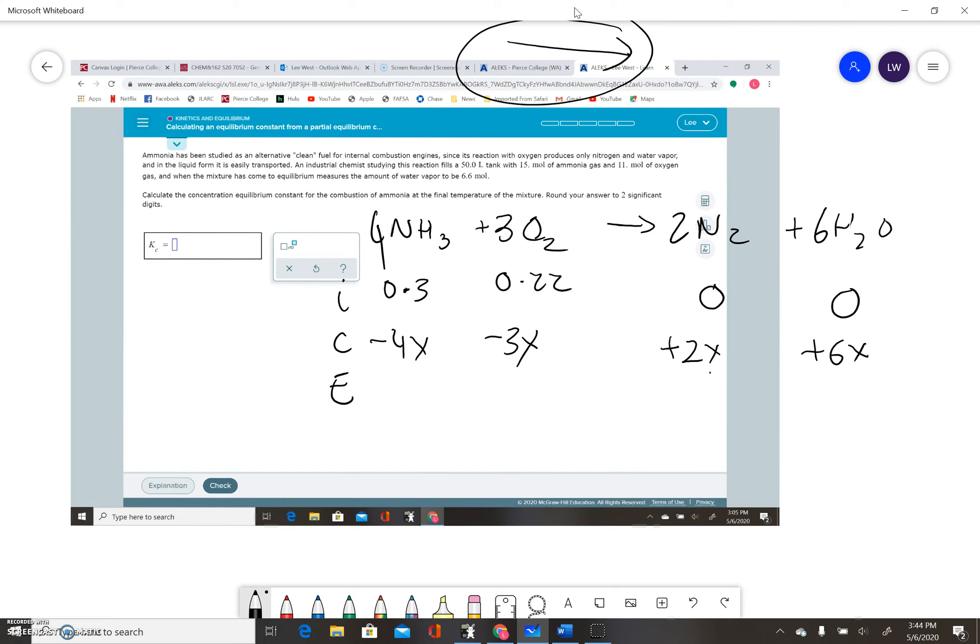Now ALEKS has a different way of doing this, but I just use the multiplier from the balanced equation as my factor in front of my x there, and it keeps everything really simple.